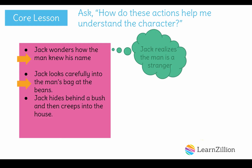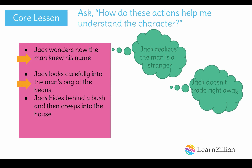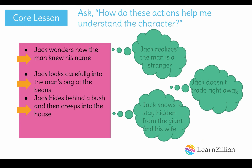In the illustration, I noticed how carefully Jack was looking into the bag. This tells me that Jack is thinking about what the man is offering and doesn't make the trade right away. On the next page, I found that Jack hides in the bush and then creeps into the house. This tells me that Jack knows to stay hidden from the giant and his wife.